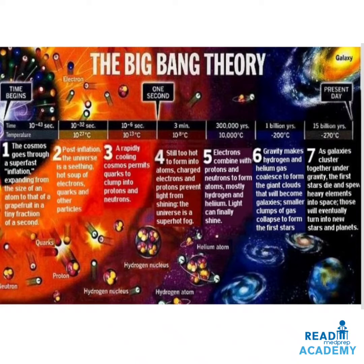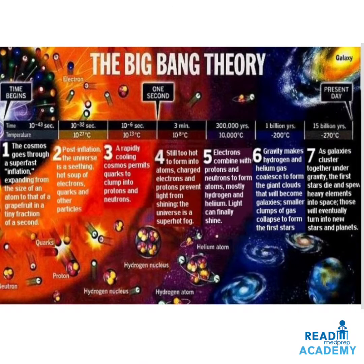At about 10 to the power of minus 6 seconds and a temperature of 10 to the power of 13 degrees centigrade, the third event occurred: a rapidly cooling cosmos permits quarks to clump into protons and neutrons. At about 3 minutes and 10 to the power of 8 degrees centigrade, the fourth event occurred — still too hot for atoms to form, preventing light from shining; the universe was a super-hot fog. Three million years ago at 10,000 degrees centigrade, the fifth event occurred: electrons combined with protons and neutrons to form atoms, mostly hydrogen and helium, allowing light to finally shine.